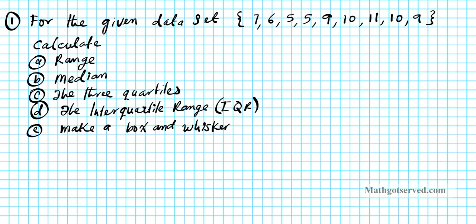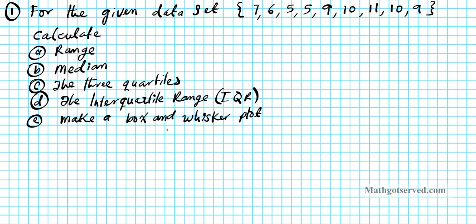Let's go ahead and do this one by one, starting from number 1 — computing the range. You have to be really careful: the range and the interquartile range are two different things. The range has to do with the difference between the first and the last elements of the ordered data set, while the interquartile range involves using two of the quartiles. So let's first order the elements of our set in ascending order.